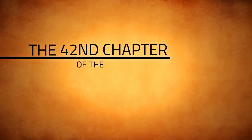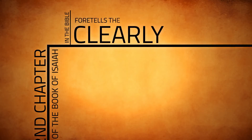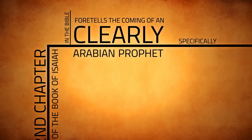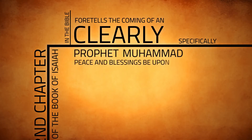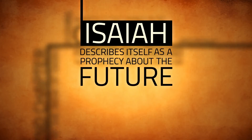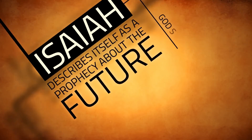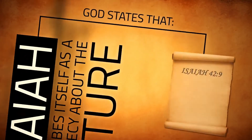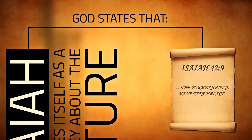The 42nd chapter of the book of Isaiah in the Bible clearly foretells the coming of an Arabian prophet, specifically Prophet Muhammad, peace and blessings be upon him. Isaiah describes itself as a prophecy about the future. God states that the former things have taken place, and new things I declare.